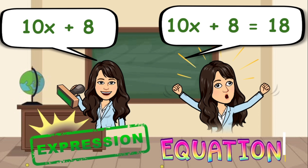Another lesson that we will be dealing with today is inequality. But before that, I want you to give me the noticeable difference between an expression and an equation. Our expression is 10x plus 8, while our equation is 10x plus 8 equals 18. An equation has two expressions — the left side and the right side — and they are separated by an equal sign, while an expression doesn't have an equal symbol and thus contains only one expression.